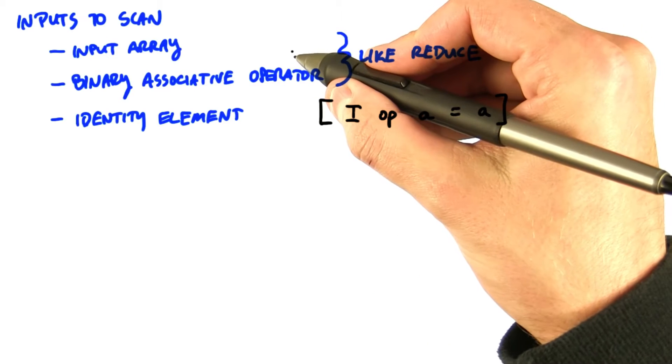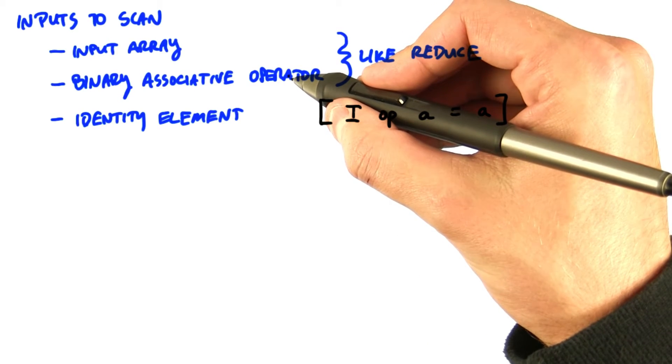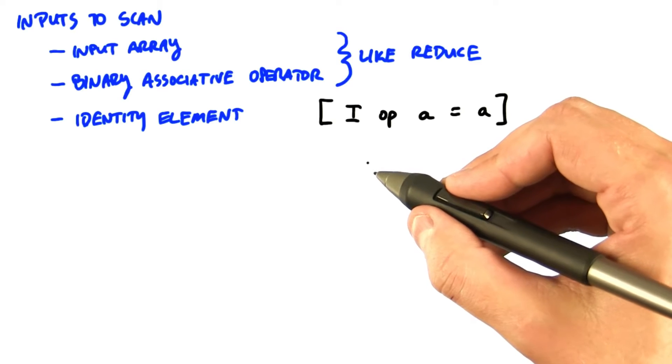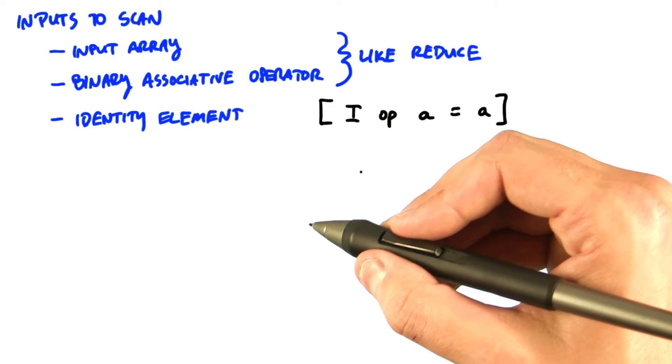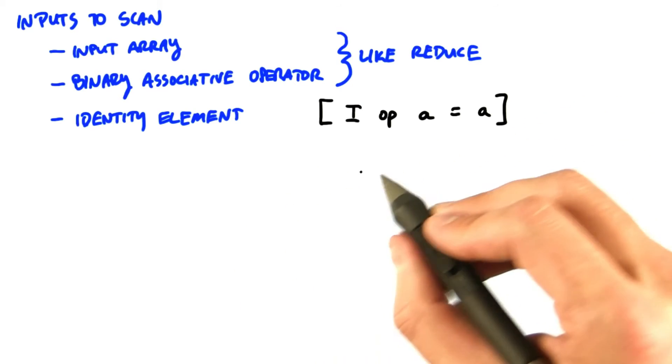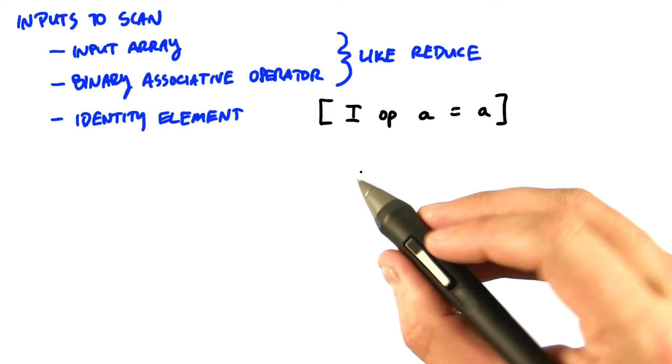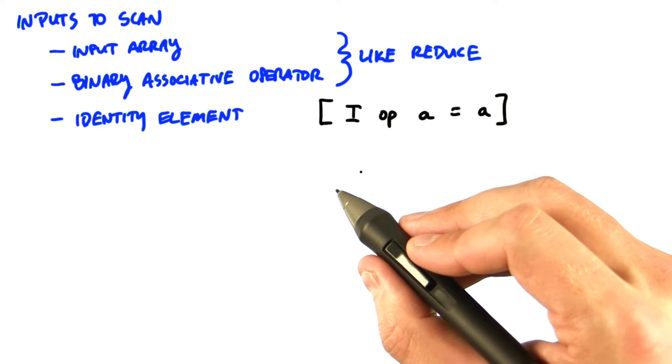Like Reduce, scan takes an input array and a binary associative operator as inputs. You may recall that associativity was useful in Reduce to allow us to reorder operations to expose concurrency, and you'd be right in thinking that we're going to do the same thing here.